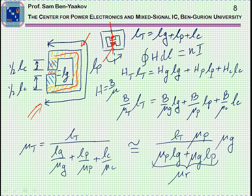The lengths of these magnetic paths are Lp for the magnetized part, Lc for the total length of the ferrite which is untouched, and Lg for the air gap. The total path is Lg plus Lp plus Lc.